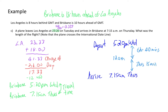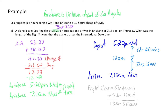Adding those two values together: 6 hours 40 minutes plus 7 hours 15 minutes equals a total of 13 hours and 55 minutes. Therefore, the flight time from Los Angeles to Brisbane is 13 hours and 55 minutes. That's an example of how to complete calculations to solve problems involving different time zones and travel time.